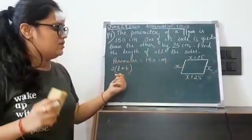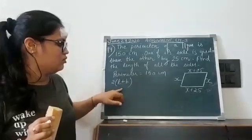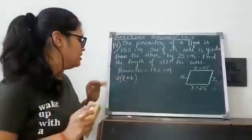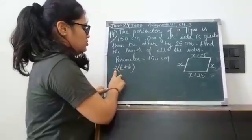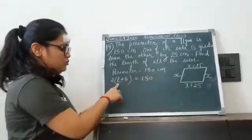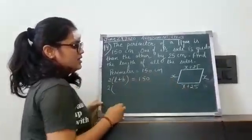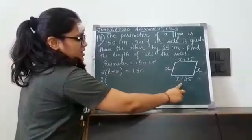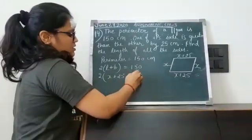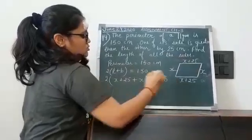When we have a rectangle, we also apply the same formula. The formula to find the perimeter of a rectangle and a parallelogram is the same. So 2 into L plus B equals 150. Now put the values here: 2 into length — any side you can consider as length. If I consider x plus 25 as length, then x will be breadth. This is equal to 150.